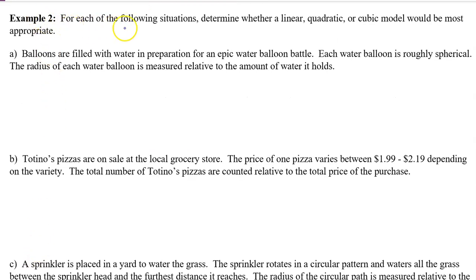Example 2. For each of the following situations, determine whether a linear, quadratic, or cubic model would be most appropriate. Part A. Balloons are filled with water in preparation for an epic water balloon battle. Each water balloon is roughly spherical. The radius for each water balloon is measured relative to the amount of water it holds. So in this context, the input values will be the radius of each balloon, and the output values would be the amount of water that the balloon holds, in other words, the volume. Because we are modeling volume, we will use a cubic model.